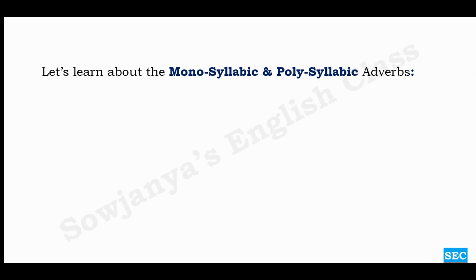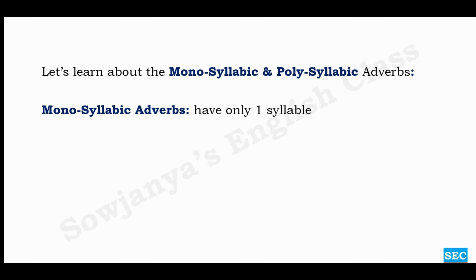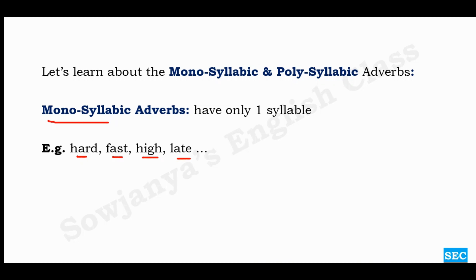Before learning about the three degrees, let us understand monosyllabic and polysyllabic adverbs, and how they affect the choice of words in comparison. Monosyllabic words have only one syllable — 'mono' means one. Examples: hard, fast, high, late. Each of these produces only one sound unit, so they are monosyllabic adverbs. A syllable is a sound unit.